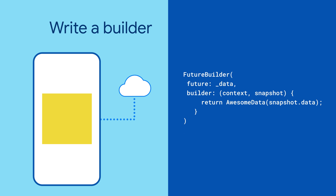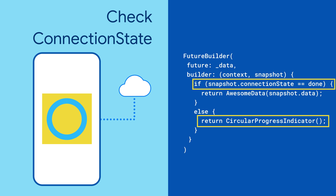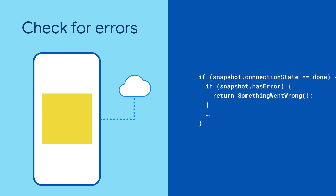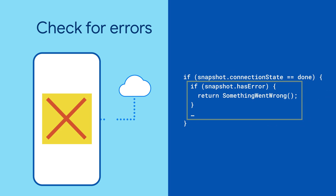From there, we'll give it a builder. But make sure to check the state of the future with connection state and display an appropriate widget while your future's busy. Finally, it's good practice to check that no errors occurred while your future was resolving.